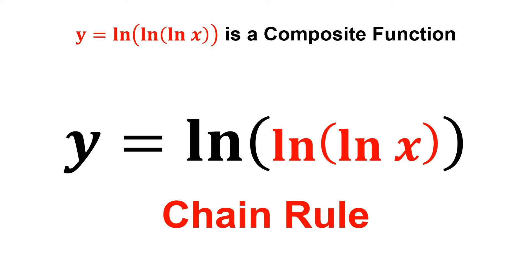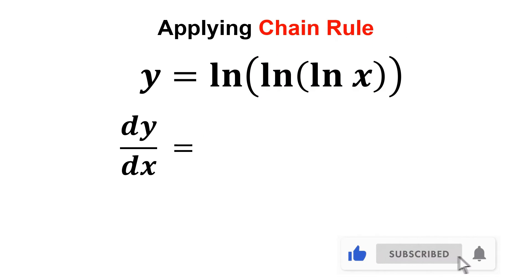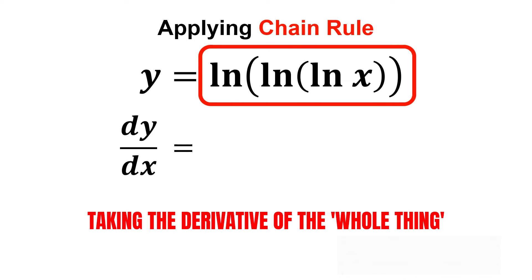Therefore, we apply the chain rule in order to find the derivative of a composite function. By applying the chain rule, we first start by taking the derivative of this whole thing.